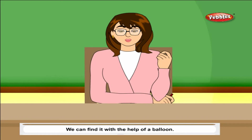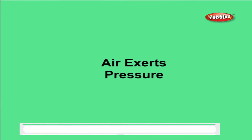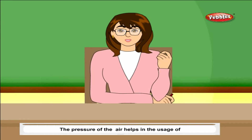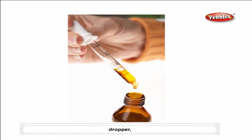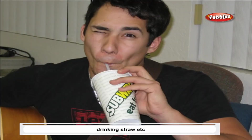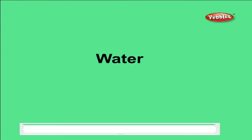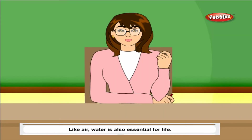Air has weight and occupies space. We can find this with the help of a balloon. Air exerts pressure. The pressure of air helps in the usage of a syringe, dropper, drinking straw, and similar tools.